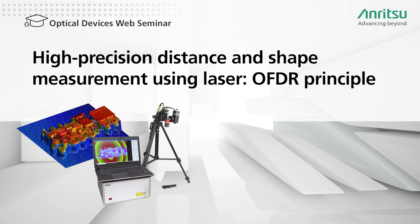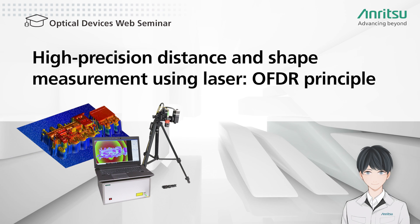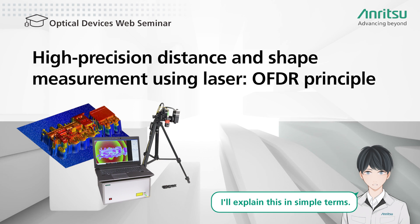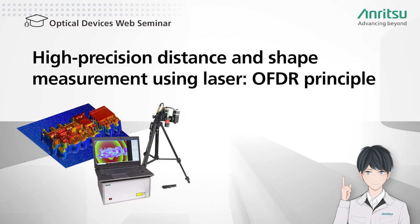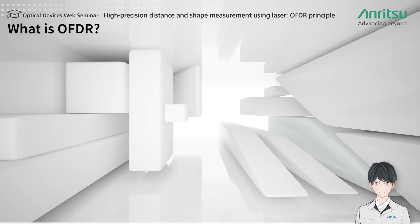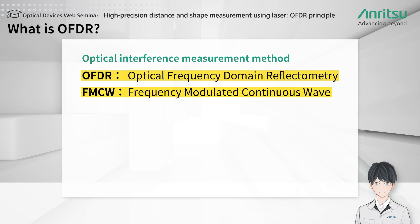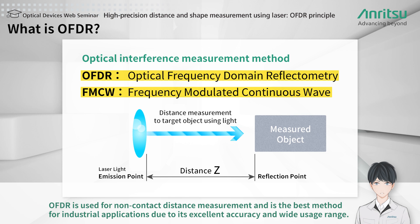This optical devices web seminar covers high-precision distance and shape measurement using the laser OFDR principle, explained in simple terms. OFDR is a measurement technique using optical interference, also known as FMCW. It is used for non-contact distance measurement and is the best method for industrial applications due to its excellent accuracy and wide usage range.